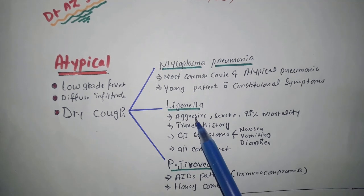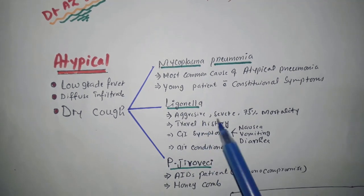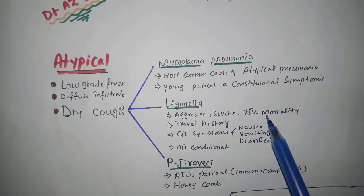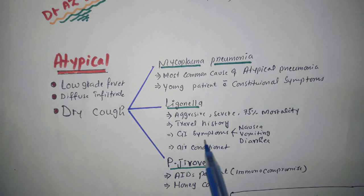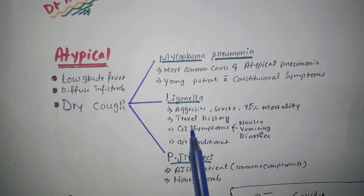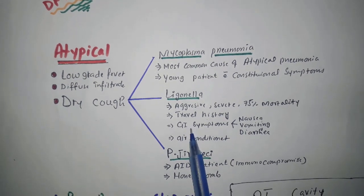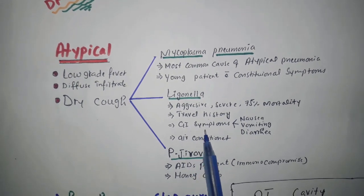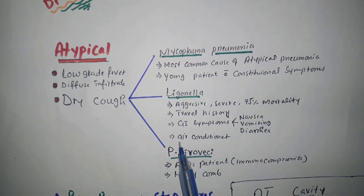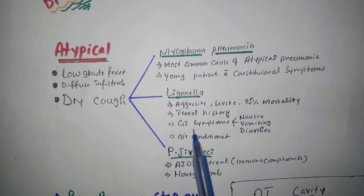Legionella. It is aggressive and severe, with 75 percent mortality. There will be travel history, GIT symptoms like nausea, vomiting, diarrhea, and it affects people who are using air conditioners — typically associated with cooling systems.